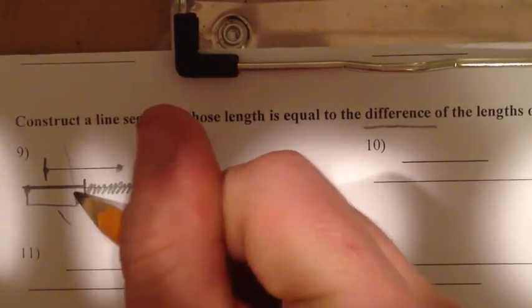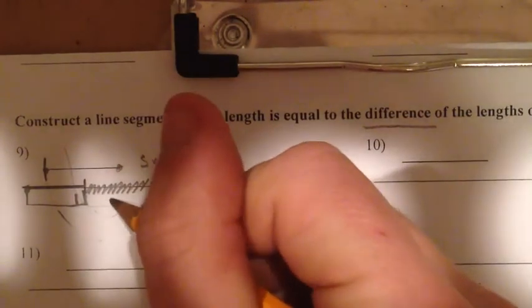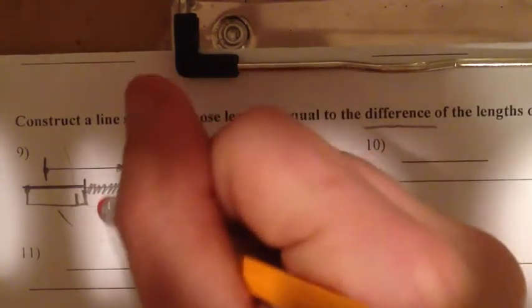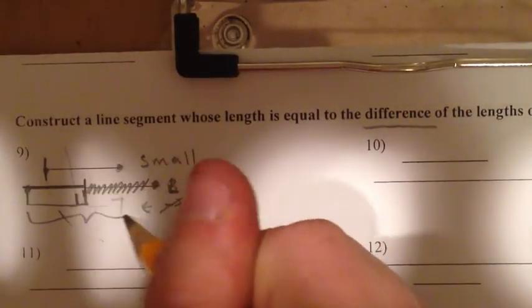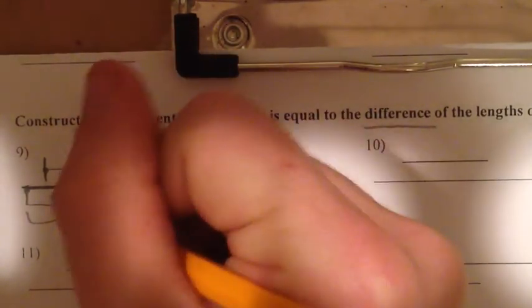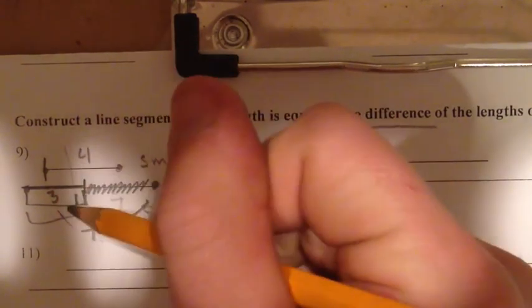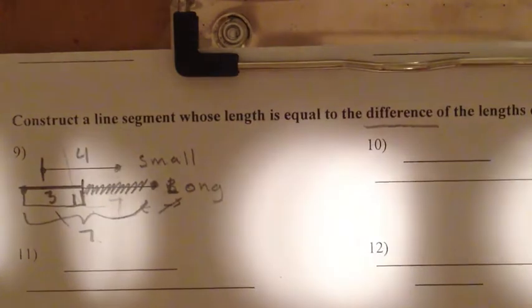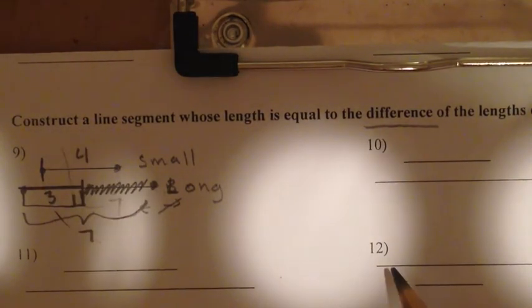And this right here represents the difference, the subtraction. So let's say this whole thing right here was 7 - and I should say it's the whole thing, not just that little piece. So the whole thing is 7, and this little piece was 4. Then this leftover would be 3, because we took away 4 and we're left with 3. There you go, that's finding the difference between two lengths using constructions.